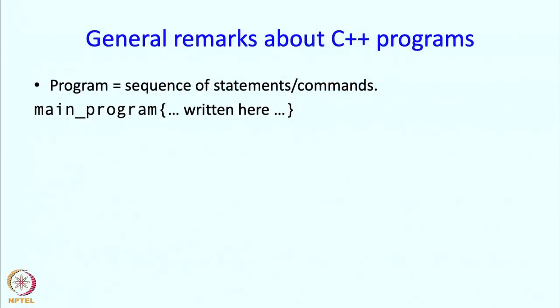Now in this segment, I am going to make some general remarks about C++ programs. A program is really a sequence of statements or commands and it has to be written in a particular manner. The keyword main_program must appear first followed by an open brace. After that, the sequence of statements representing the main program have to be put in, and finally the closing brace has to be put in.